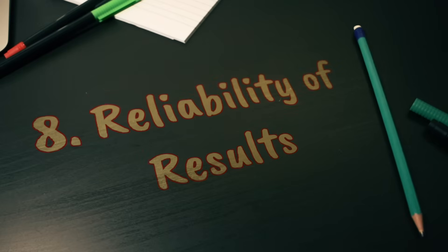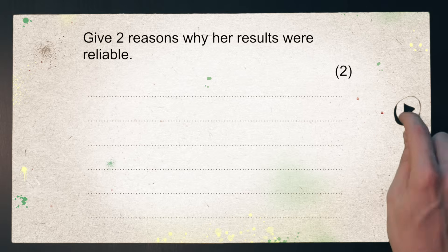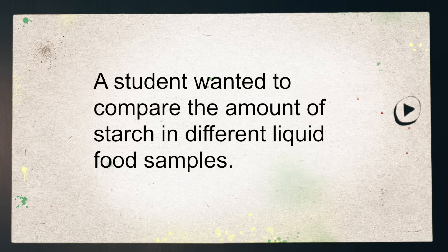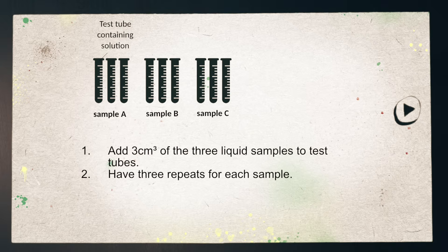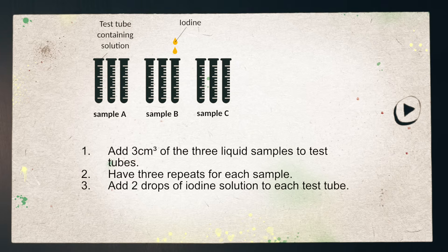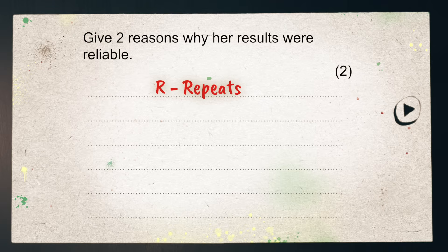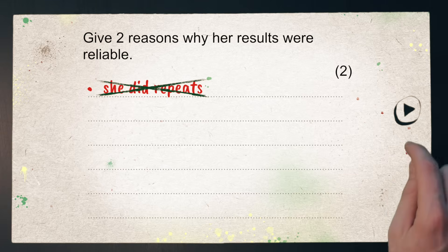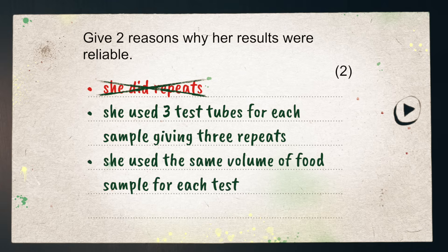Reliability of results. You'll sometimes be presented with an experiment and the question will read something like 'give two reasons why her results were reliable'. For example: a student wanted to compare the amount of starch in different liquid food samples. She adds 3 cm³ of each liquid sample to different test tubes and does three repeats for each sample. She then adds two drops of iodine solution to each test tube and compares the intensity of the colour change on a spotting tile. For most reliability questions, look for repeats and look for something that is kept the same. Don't just say 'she did repeats' — it's too vague. You could state that she used three test tubes for each sample giving three repeats, and that she used the same volume of food sample for each food test.